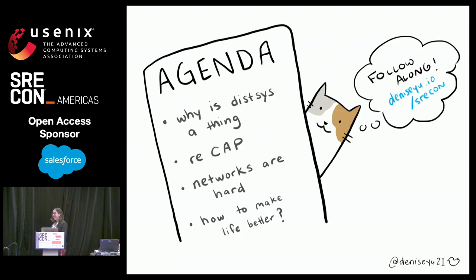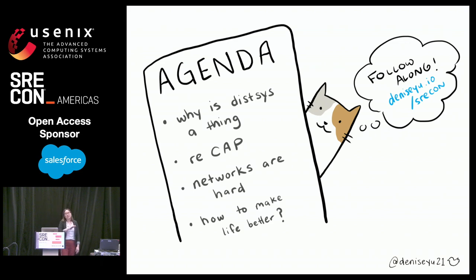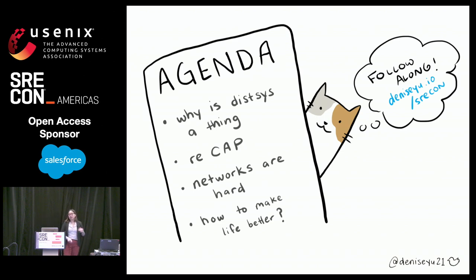So here's a rundown of what I'm going to be covering today. I'm going to start with a brief history lesson, a story about how distributed systems got to where they are today, and then a recap of CAP theorem. If that doesn't mean anything to you right now, don't worry — it will by the end of this talk. I'll segue into a deeper look at why network partitions are an especially gnarly problem in distributed computing, and I'll close out by talking about some ways that we can mitigate the pains.